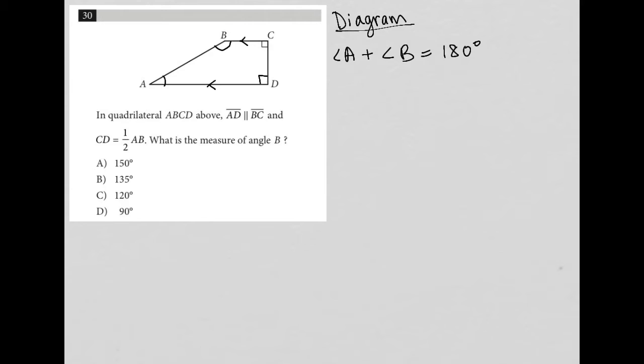We're also told that CD is one half of AB. So that means that the length here, I'll call that length X. So CD is equal to one half of AB. If CD is X and it's one half of AB, that means AB would have to be 2X. Okay, so now I'm finished labeling.